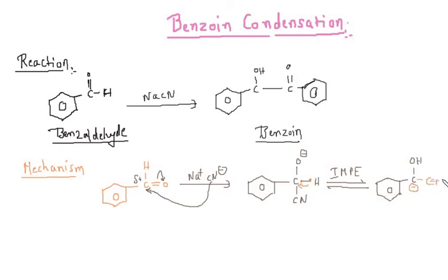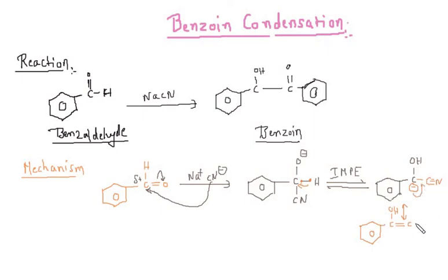And this comes out to be C triple bond N, which is also having a resonating structure. Let me draw it. So this is C-OH, and the negative is shifted over here, so there is a double bond: C double bond C double bond N, and nitrogen gets a negative charge. These two are resonating structures.